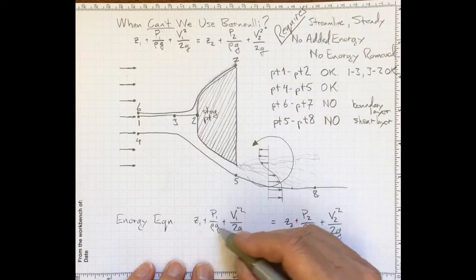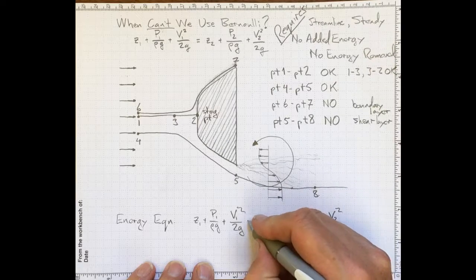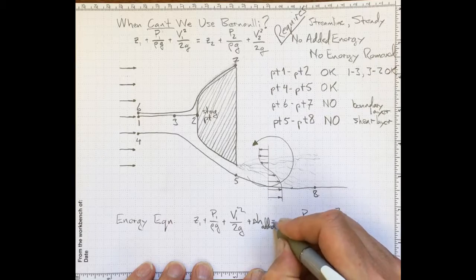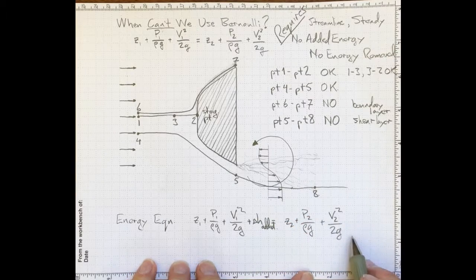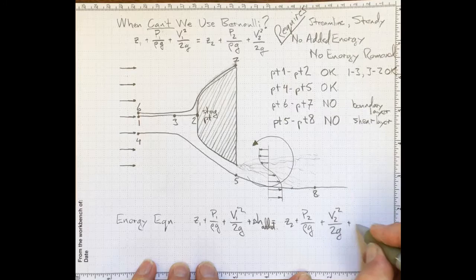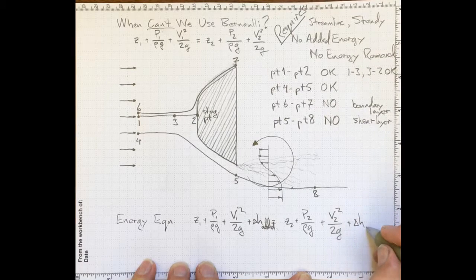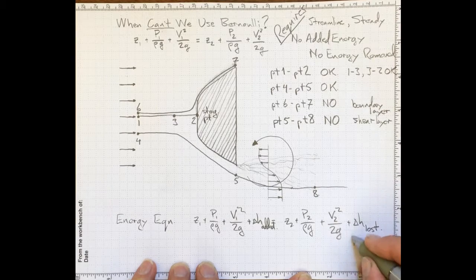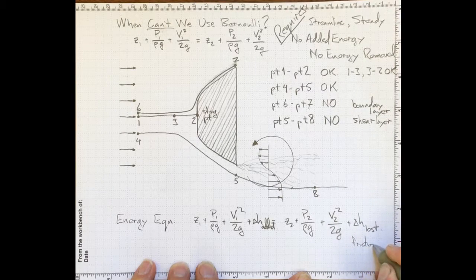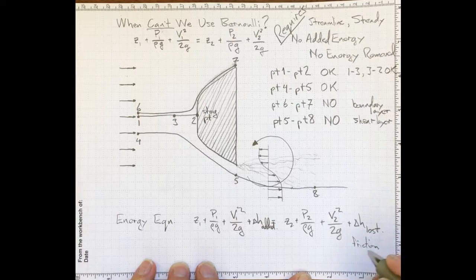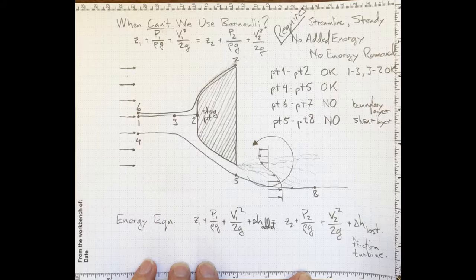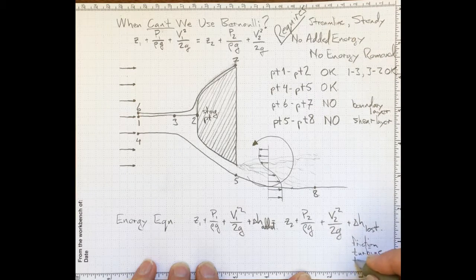it also has some terms to allow for added energy. So all of the energy that we had at location one plus any energy that we added must equal all the energy we still have at point two plus any energy that we lost. Energy that was removed - this would include friction, useful work taken out by a turbine, or totally disorganized work, energy taken out by turbulence.